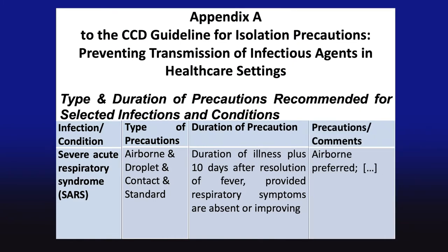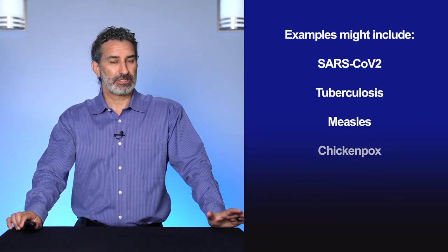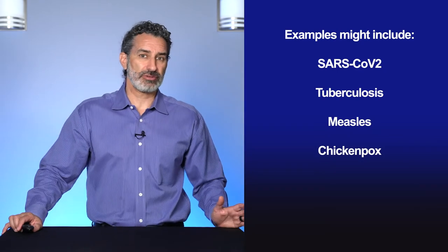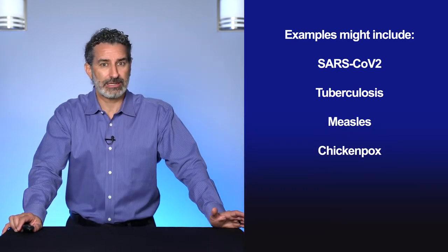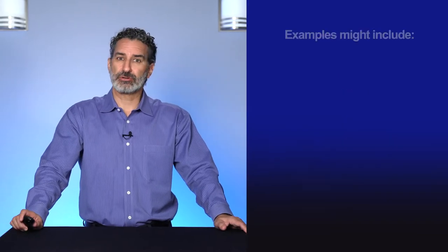For SARS, for example, you have airborne precautions, droplet precautions, contact precautions, and standard infection control precautions. The duration depends on the illness — for SARS, it would be the duration of illness plus 10 days after resolution of symptoms such as fever or respiratory symptoms. Use airborne precautions for patients known or suspected to be infected with an agent transmittable by the airborne route — examples include SARS-CoV-2, tuberculosis, measles, or chickenpox.